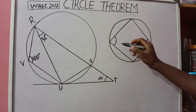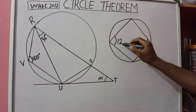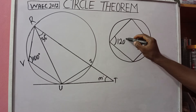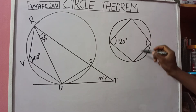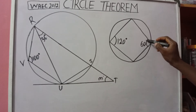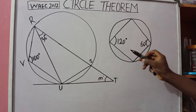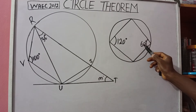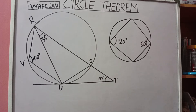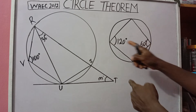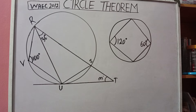For instance, if one angle is 120 degrees, the opposite angle should be 60 degrees, because 120 plus 60 gives us 180 degrees. That is why we say the opposite angles of a cyclic quadrilateral are equal to 180 degrees, and that is exactly what we mean by supplementary angles.